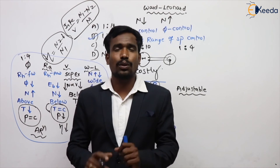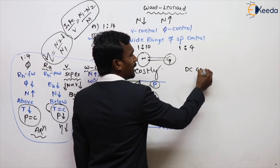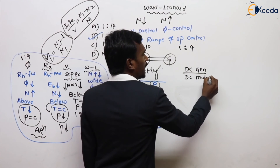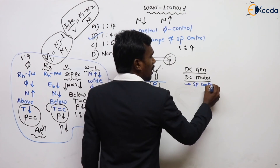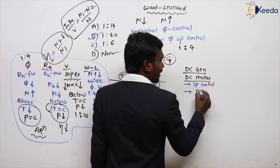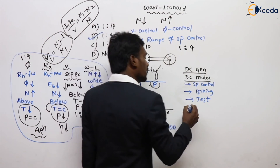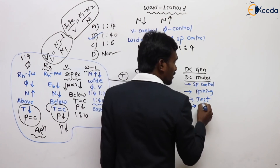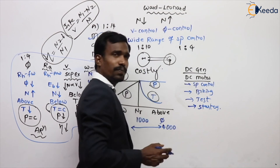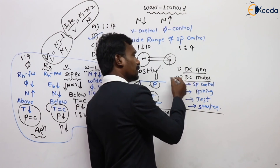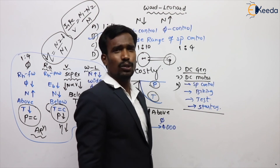In DC machine, we have three parts: DC generators, DC motors, and special topics. We have completed generators and motors. In the third part we have speed control, braking methods, tests on DC machine, and starters of DC machine. So these are the parts: generators, motors, and then starting, testing, speed control, and braking the motor.